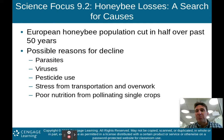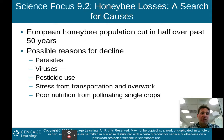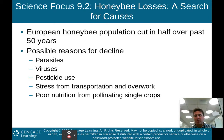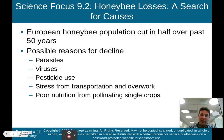The European honeybee population has been cut in half over the past 50 years. We're not exactly sure what is the reason for these declines, but probable causes include parasites, viruses, pesticide use, stress from transportation and overwork, and poor nutrition from pollinating a single crop. Having acres and acres of corn doesn't help — it decreases biodiversity and gives bees poor nutrition. Just like humans need to eat different types of fruits, foods, and vegetables, bees and other insects need a variety in their diet as well.